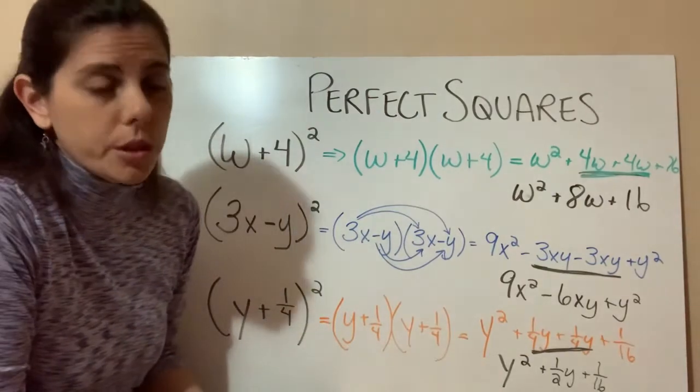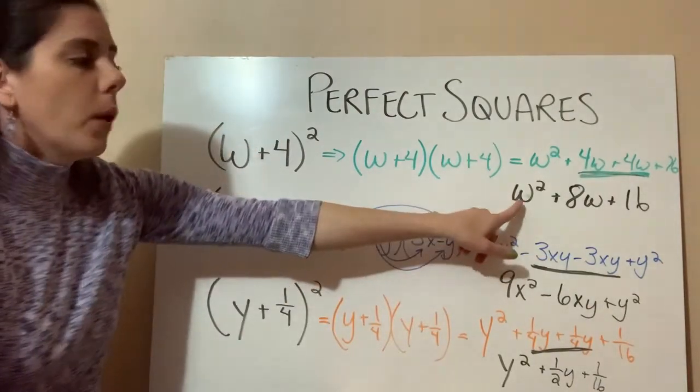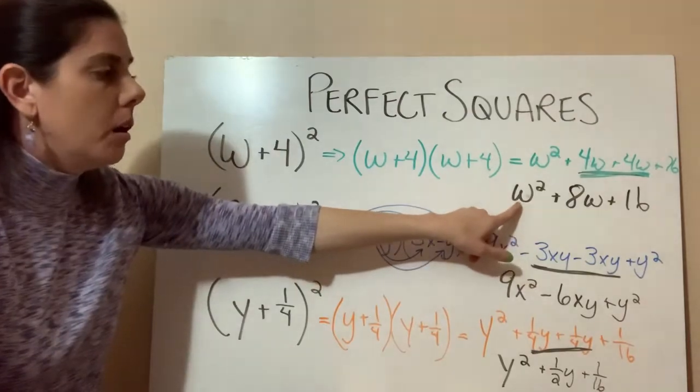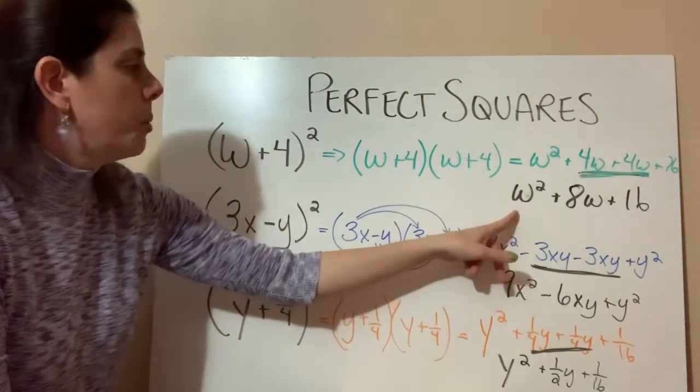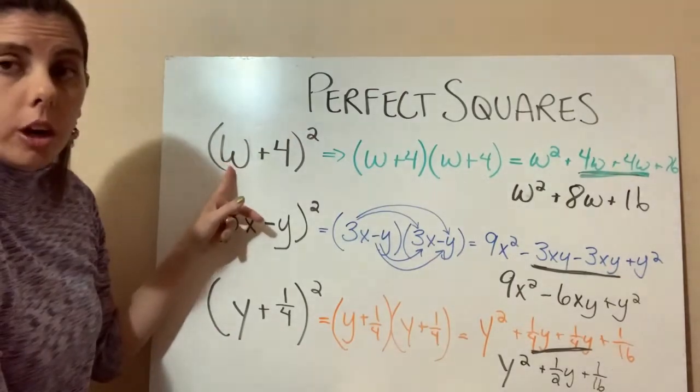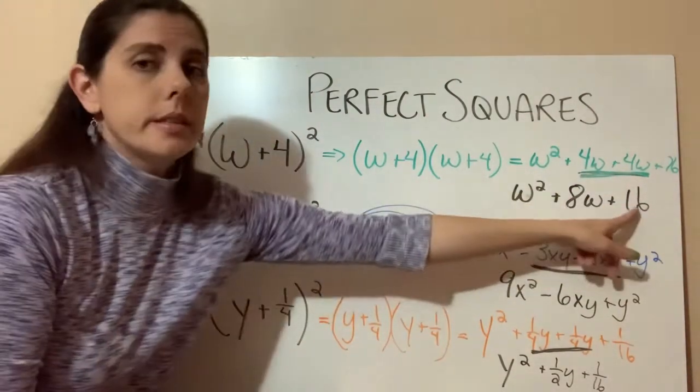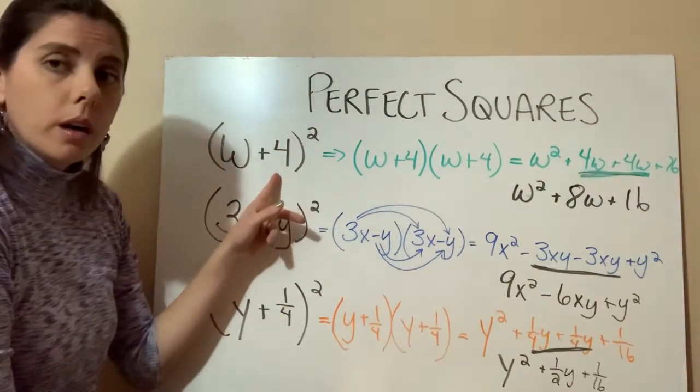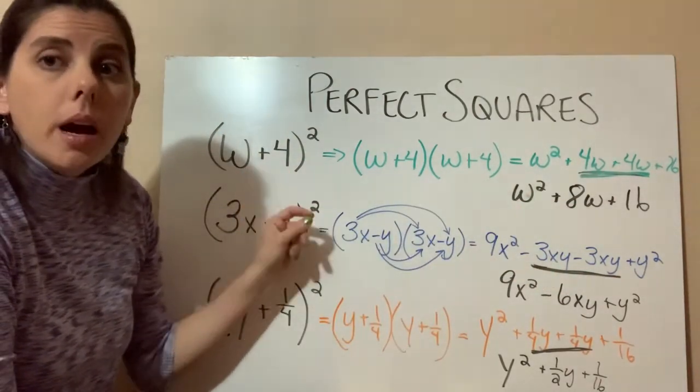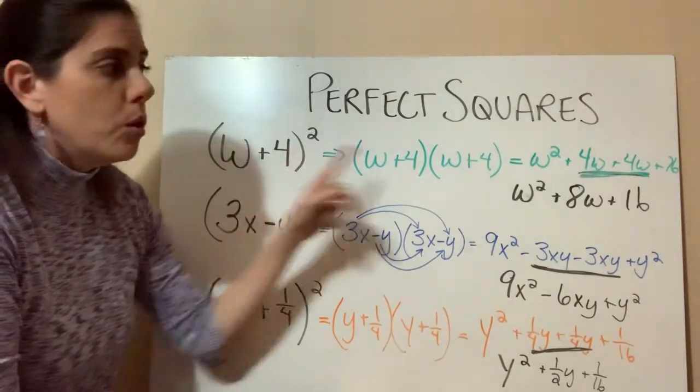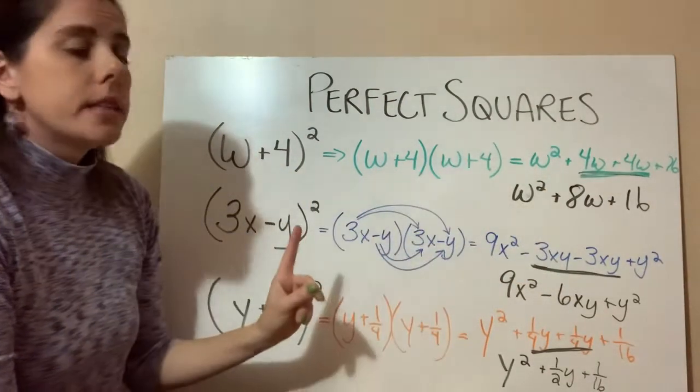So just keep that in mind. Now the pattern that I would like everyone to see is whenever we end up with the trinomial here, we notice that the first term in this trinomial is the first term squared in our binomial. And then our last term is the last term squared. So w squared, 16. W times w, 4 times 4. And what is our middle term? Our middle term is in this case the last term plus the last term. So 4 times 4 gets us the 16, but 4 plus 4 is going to give us the 8. So let's see if that holds true in our next one.